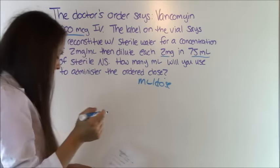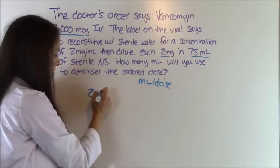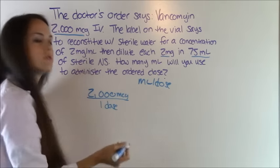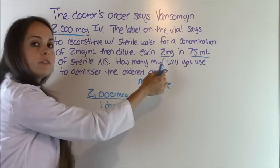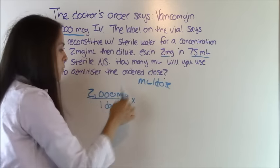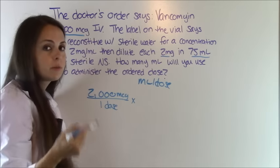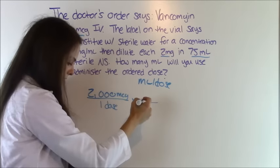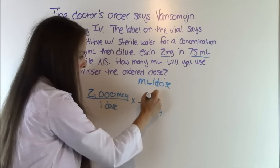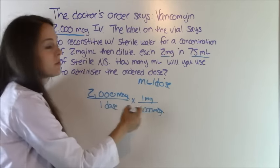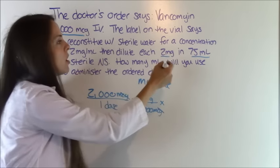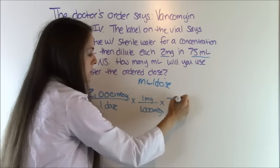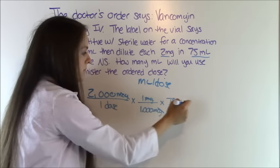Now let's solve our problem. I always like to start out with what the doctor ordered: 2,000 micrograms equals one dose, and we're trying to get to milliliters per dose. Right now we're in micrograms per dose. Our information says 2 milligrams in 75 cc's, so we've got to convert micrograms to milligrams. From the metric table we know there are 1,000 micrograms in one milligram — that cancels out micrograms and now we're in milligrams per dose. Now we can use our problem information: after reconstitution, 2 milligrams per 75 milliliters. Cc's and milliliters are the same thing.